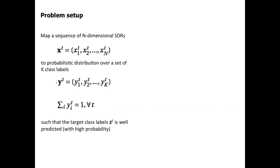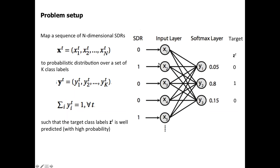The CLA classifier takes the current state of the HTM temporal memory — that state itself incorporates time in the past. So you're not actually classifying the sequence; you're classifying a single SDR. You should take whatever the current state is, and that state was derived from a series of inputs. So this is the current state of the HTM — a high-dimensional SDR — and I want to map it to a set of classes.